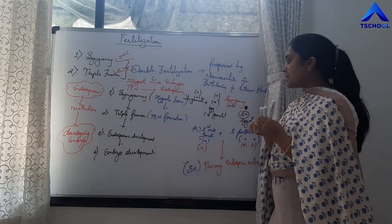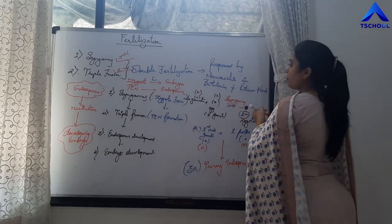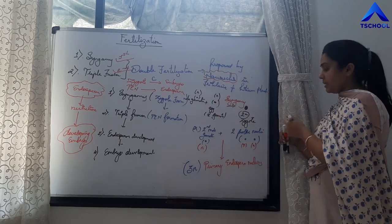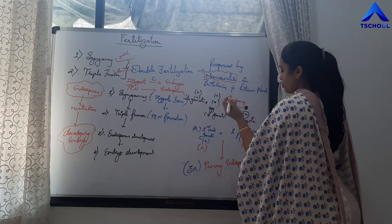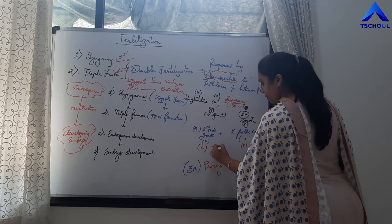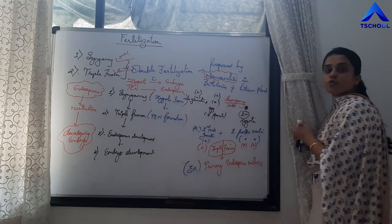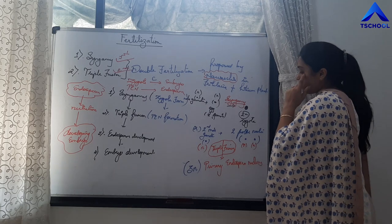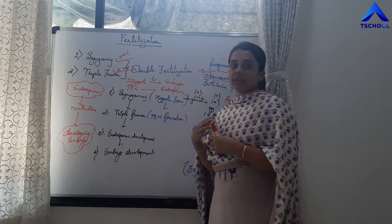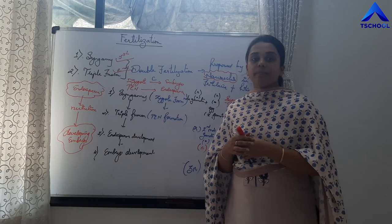This event is called double fertilization. Syngamy is the fusion of one male gamete and one female gamete, and triple fusion is the fusion of the second male gamete and two polar nuclei. Our next topic is how endosperm is developed and then how there is development of the embryo.